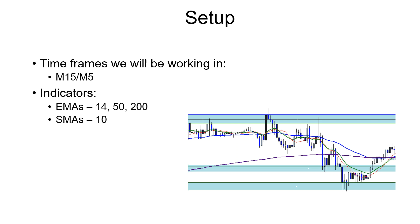The setup is very easy as far as what indicators we're going to be working with. The timeframes are going to be M15 and M5 — we will obviously zoom out to higher timeframes to set our support and resistance levels. The indicators I use are the 10 SMA and then the 14, the 50, and the 200 EMAs. At the 15-minute and especially the 5-minute timeframe, that's really all you're going to need. Anything larger than that — if you have an 800 SMA on there — you're probably not even going to see it.